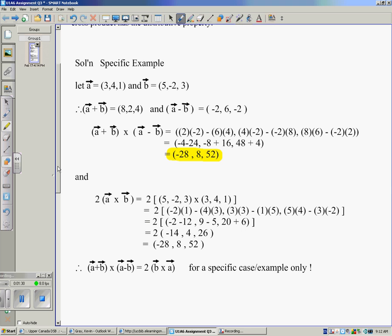Now, using that same specific example and those two vectors that I made up, but basically just used as a specific example, then A cross B is taken here, works out to be negative 14, 4 and 26.